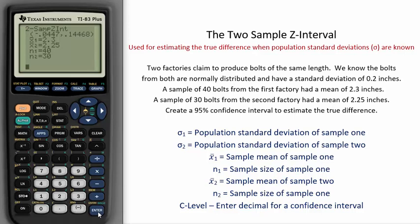Since the interval contains 0, it is possible that the true difference could be 0. This means, in fact, that there might not be a difference between the two factories. Our 95% confidence interval,